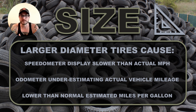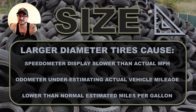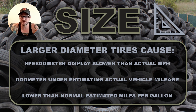A customer might complain about power loss. Putting a larger diameter tire on a car or truck actually drops torque — you're losing torque to the larger diameter tire. It could also mess with transmission shift timing, cause erroneous or hypersensitive ABS, and affect traction control and vehicle stability control operation.